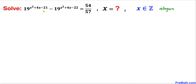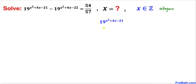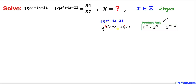Before we solve this exponential equation we are going to manipulate it. Let's focus on the very first term: 19 to the power of (x squared plus 4x minus 21). We are going to tweak the part negative 21 — we can write negative 21 as negative 22 plus 1. So this becomes 19 to the power of (x squared plus 4x minus 22 plus 1). Grouping and applying the product rule of exponents, this equals 19 to the power of (x squared plus 4x minus 22) times 19 to the power of 1.